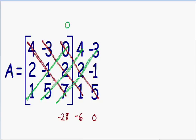In the second diagonal, we have 5 times 2, which is 10, and 10 times 4, which is equal to 40. In the third diagonal, we have 7 times 2, which is 14, and 14 times negative 3, which is equal to negative 42.